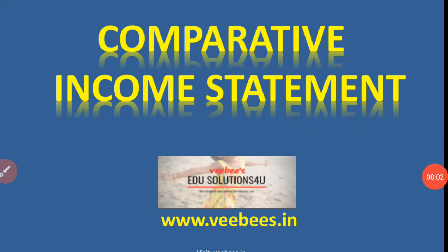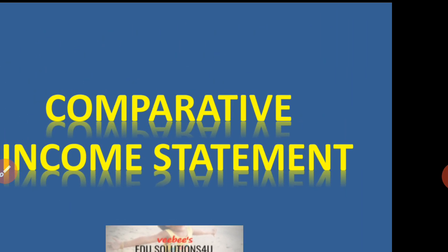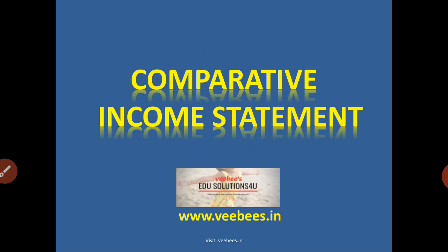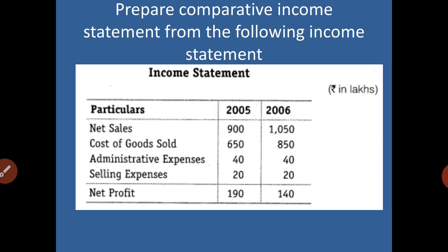We are discussing the topic comparative income statement, which is a part of horizontal analysis. In comparative income statement, we will be provided with the income statement for two years and asked to prepare a comparative income statement. The question will be: 'Prepare comparative income statement from the following income statement.' Sometimes only the items related to the income statement will be given.